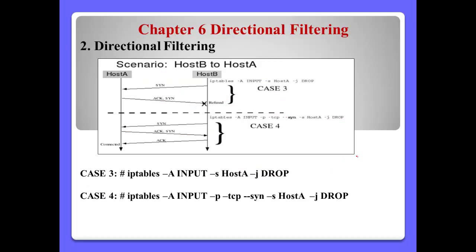Number 2, Directional Filtering, Case 3. Host B has this kind of rule: iptables -A INPUT, source address Host A, -j DROP. Now Host B tries to send the SYN packet to Host A — no problem. But if Host A tries to reply to this SYN packet with ACK and SYN, then this one will also be refused.